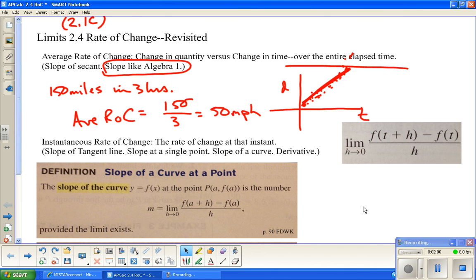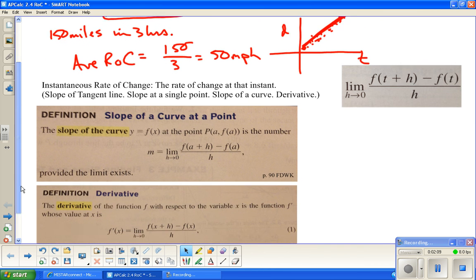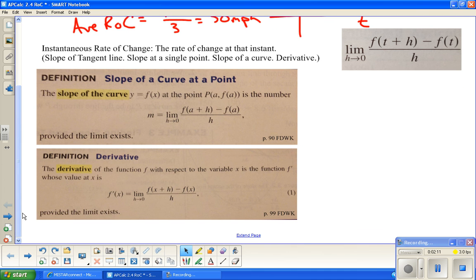Slope of a curve at a point, also related, and this is instantaneous rate of change. Instantaneous rate of change is like the rate of change or the speed at a specific time. If I've been driving for 3 hours, I want to know what's my speed 20 minutes into my drive. That's a very different question.